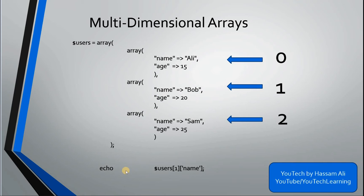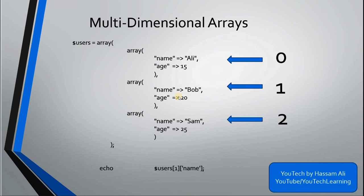We simply use echo followed by the parent array name, which is 'user', followed by its default index value. When you define an array it automatically gets default index values: 0, 1, 2. You can also name these arrays but that is more advanced and I will teach that in a future lecture. So first we select the parent array 'user', then the array number — for example 1 — and then the key we want, such as 'name', which would display 'Bob' in the browser.